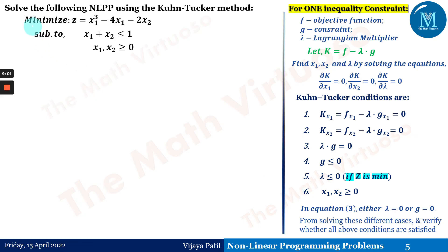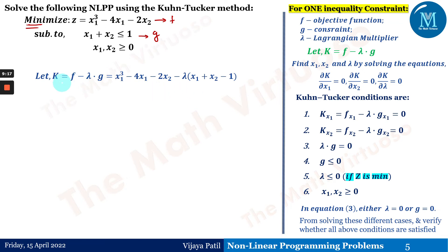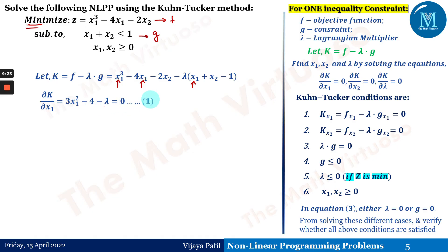Now let us address a minimization problem. The objective function is Z = x₁³ − 4x₁ − 2x₂, with constraint x₁ + x₂ ≤ 1, and non-negativity constraints. We define K = f − λ·g. Differentiating K with respect to x₁: the terms with x₁ give 3x₁² − 4 − λ = 0. That is the first condition.